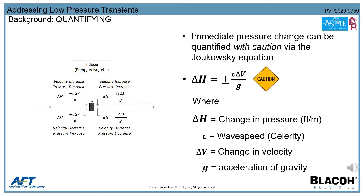The opposite is true when the pump shuts down: the fluid velocity decreases, causing a high pressure transient at the inlet and a low pressure transient at the outlet of the pump. The reason for caution when using the Joukowsky equation is that it is not always the worst case pressure circumstance. It can capture the initial pressure change, but computer surge simulation software becomes necessary once transient pressure waves begin superimposing upon themselves, or when other events such as line pack and cavitation occur.